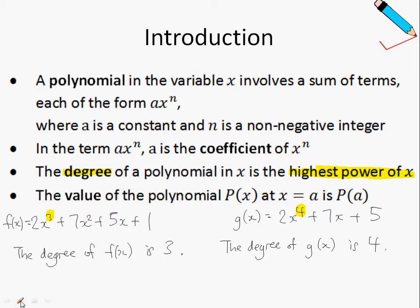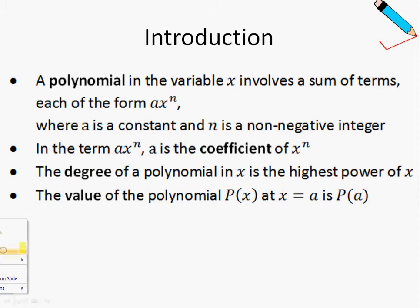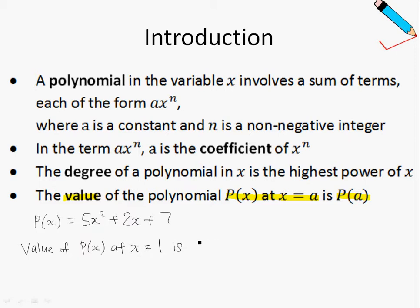And lastly, the value of a polynomial px at x equals a is p(a). So, the value of px at x equals a is p(a). This looks kind of tough to digest at first. So, let's use a very simple example. Let's say I have a polynomial, let's call it px. So px equals 5x squared plus 2x plus 7, for example.